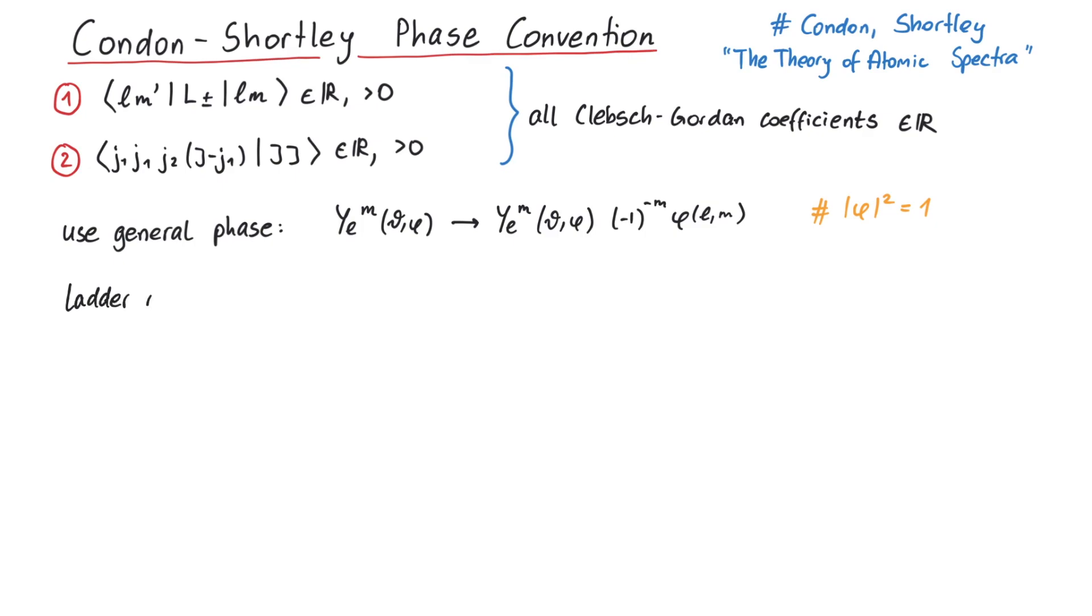Now, let's take the ladder operators and act with them on the spherical harmonics. Usually, this yields the well-known square root, and the spherical harmonic on the right now has a different m, either plus or minus one, depending on the ladder operator. So what happens if we remove the Condon-Shortley phase?